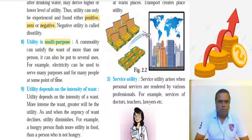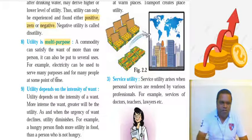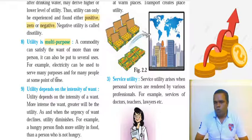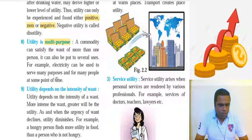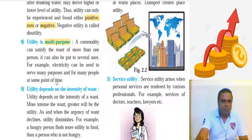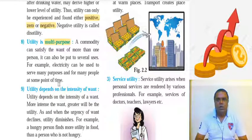And lastly, point number nine: utility depends upon the intensity of want. When your want is more intense, you get more utility. When you are very thirsty after a long lecture, a bottle of water gives you much more utility. Before an exam with only fifteen minutes remaining, a textbook gives you enormous utility — but in June, the same book may not give as much. When you are very hungry, the first chapati you eat — you don't even have time to chew properly — that intensity means a hungry person finds more utility in food than a person who is not hungry.